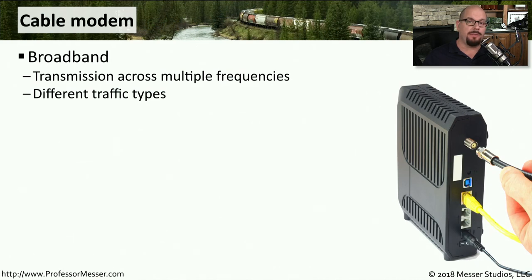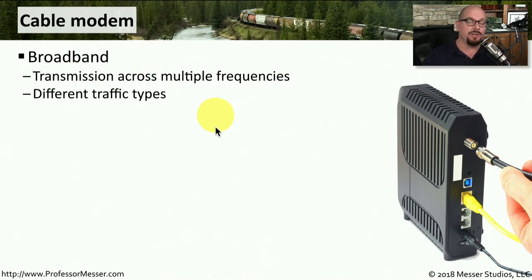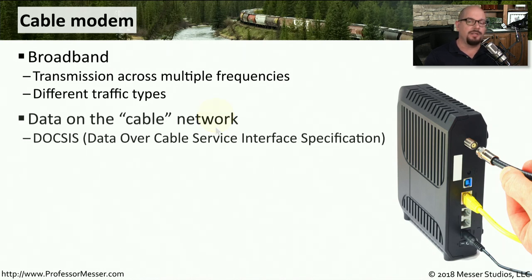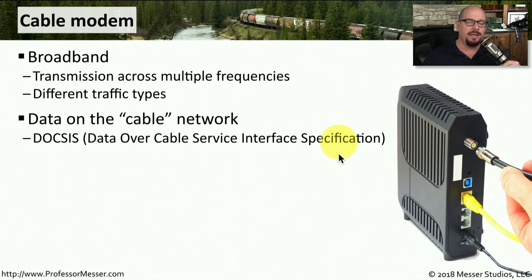A very common internet connection type in the home is a cable modem. We sometimes refer to this as broadband communication because we are sending information over many different frequencies on the same wire. This also allows different traffic types on these different frequencies, so it's not uncommon to have video, voice, and data coming across this single cable modem connection. You may hear this referred to as DOCSIS, which is Data Over Cable Service Interface Specification — the standard used on cable networks to send data to these cable modems.